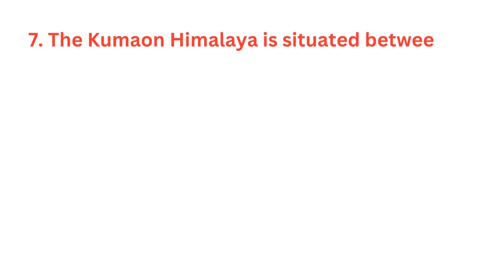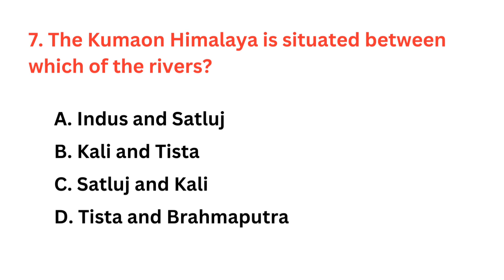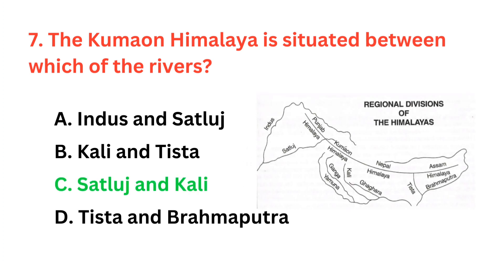The Kumaon Himalaya is situated between which of the rivers? The correct answer is option C, it's situated between Satluj and Kali.